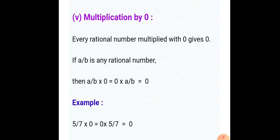The fifth property is multiplication by 0. Every rational number, integer, or whole number multiplied by 0 always gives 0. If you multiply 2/3 by 0, you get 0. If you multiply 7/8 by 0, you get 0. Any real number multiplied by 0 always gives 0.